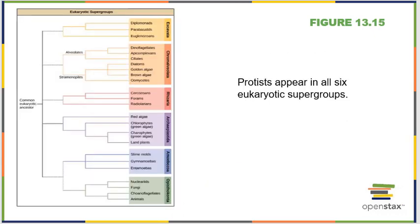We split protists into six huge eukaryotic supergroups. Plants, animals, and fungi all fit within these groups as well. Their names are Excavata, Chromioalveolata, Rhyzaria, Archeoplastida, Amoebazoa, and Opisthokonta. Both fungi and animals are in that last group, while plants are in the Archeoplastida group. We split them up this way because everyone in these six supergroups appears to have had the same eukaryotic ancestor, though they have all diverged from one another quite drastically since then.